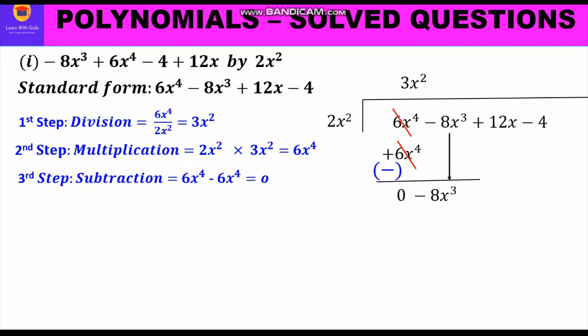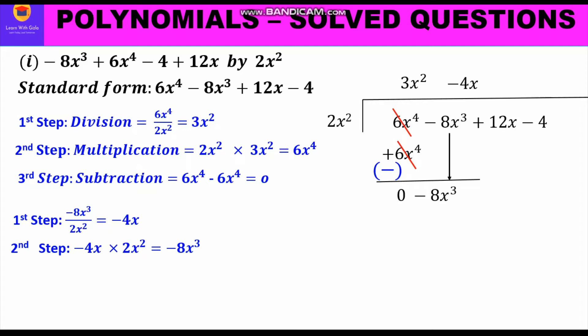We bring down the next term, minus 8x³, and go through the three-step approach again. First, division: minus 8x³ divided by 2x² gives minus 4x, which we write in the quotient. Second, multiplication: 2x² times minus 4x gives minus 8x³. Third, subtraction: minus 8x³ minus (minus 8x³) — minus and minus become plus, so they cancel and we get 0.